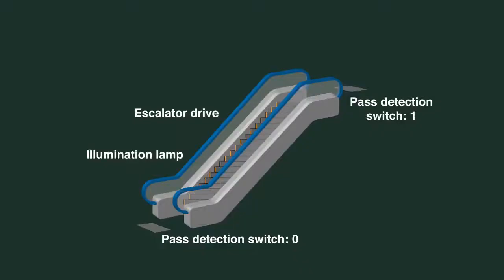There are two sensors. One is at the entrance, and one is at the exit. If the sensor at the entrance is turned on, a lamp will turn on, and the escalator, which was stopped, will start moving.